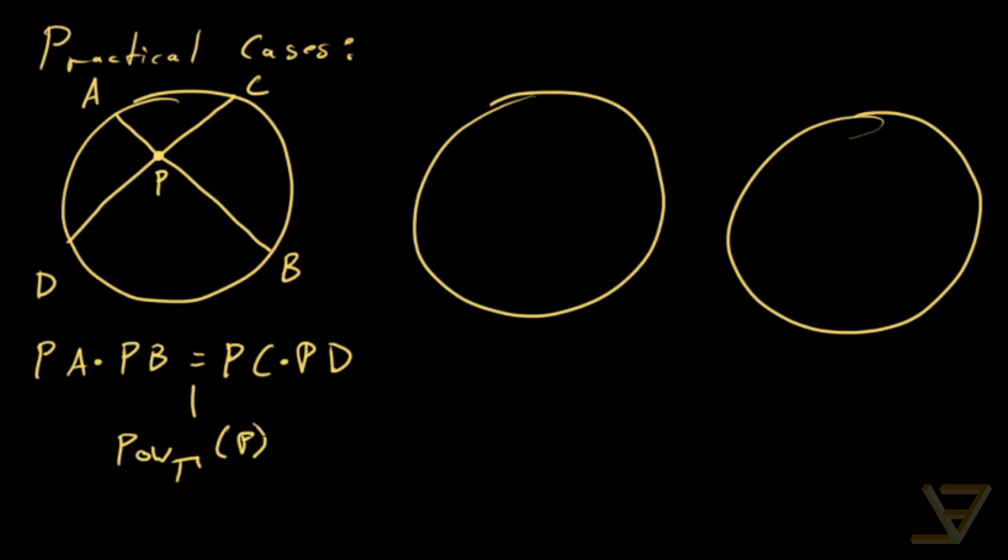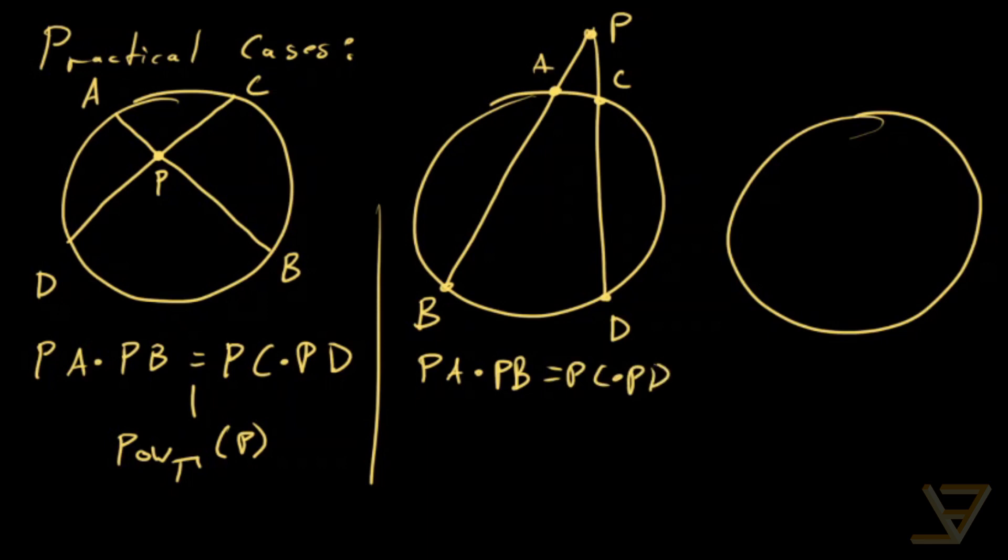The second case that comes up often is where we have an external point and two secants. Let's call this P and this point here A, and this B, and this one C and this one D. Then in this case again we have PA times PB is equal to PC times PD. And once again the common value is—oh sorry back here, it's negative, negative power of gamma of P. That's the common value. Over here though, the common value is power with respect to gamma of P.